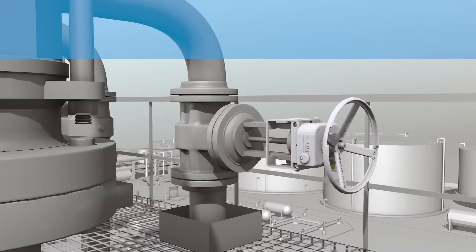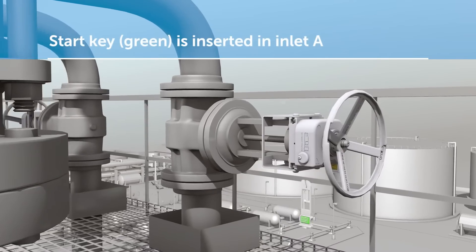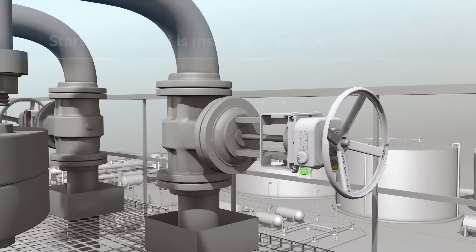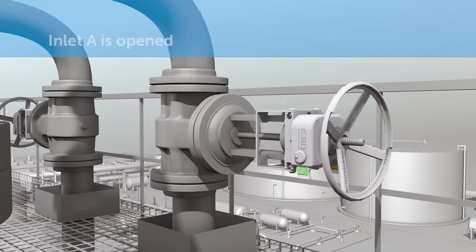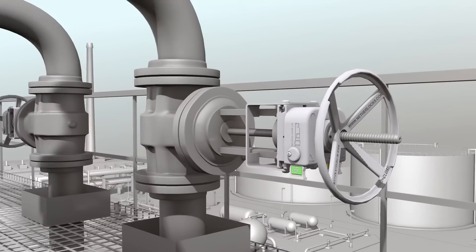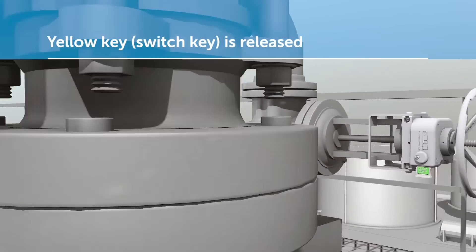The start key unlocks inlet valve A. Another key is trapped inside. Once inlet valve A is opened, the start key is trapped and the second key released.